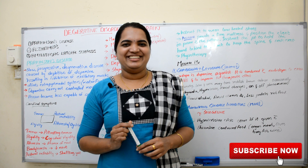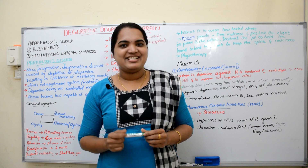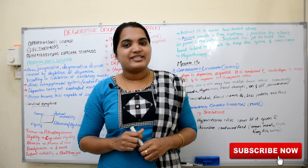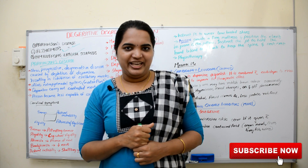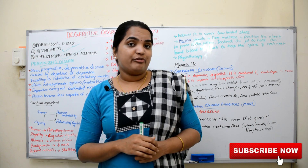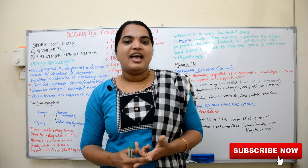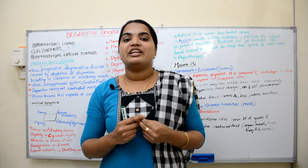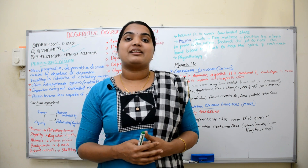Welcome to Nursing Mantra. Today our system is the neurological system, and we are going to discuss degenerative disorders of the brain. There are mainly three types: Parkinson's disease, Alzheimer's disease, and amyotrophic lateral sclerosis. We will now discuss Parkinson's disease in detail.